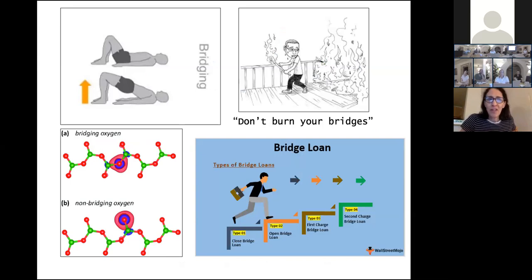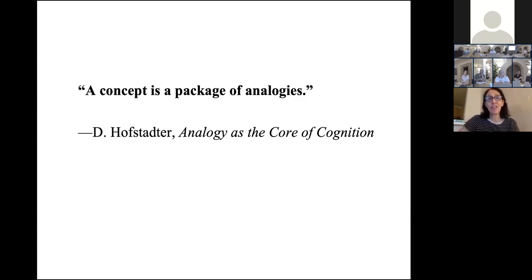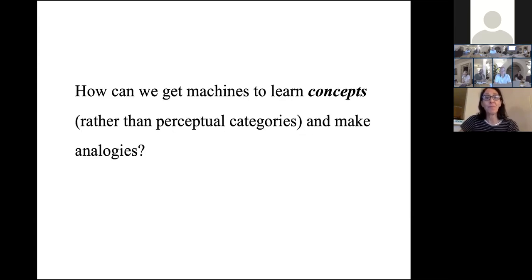We humans are very good at many different notions of bridges. How do we get machines to understand these concepts? Hofstadter defined a concept as 'a packet of analogies,' which is a really nice definition — it captures this idea of the bridge, where all of these cases are really analogies and metaphors. So how do we get machines to learn concepts rather than perceptual categories and make analogies?